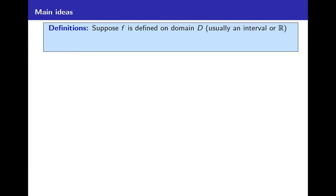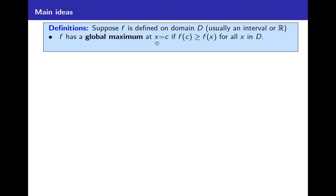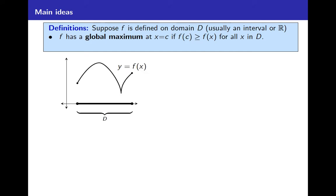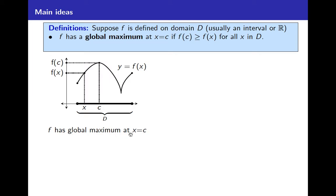Let's lay out the main definitions. Suppose f is defined on a domain d — usually d is an interval, either the natural domain of f or maybe some interval determined by an application. We say f has a global maximum at x equals c if f of c is greater than or equal to f of x for all x in d. In other words, f of c is as big as you could possibly get.